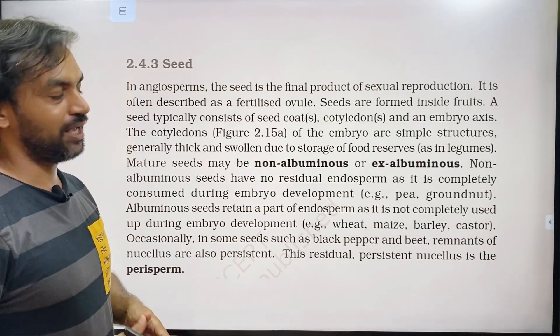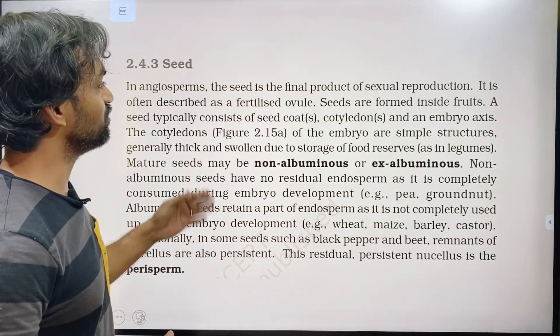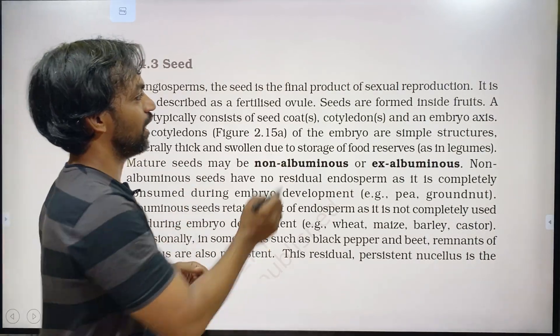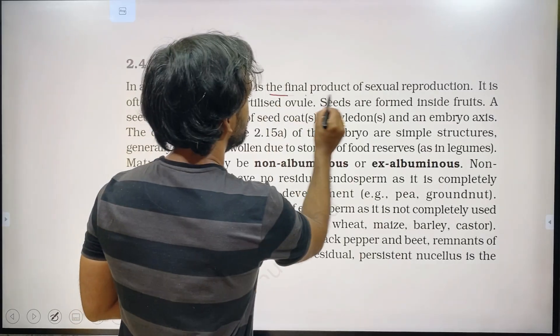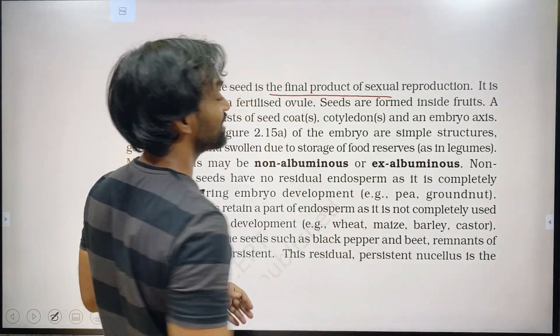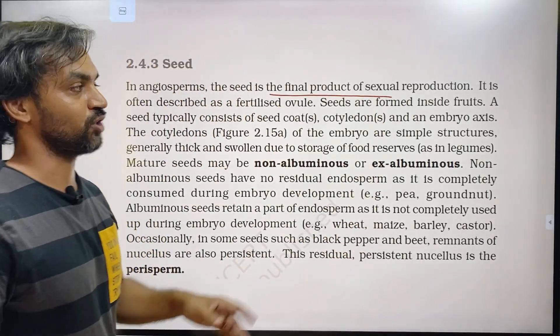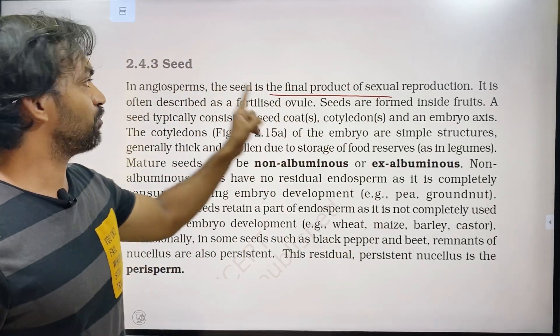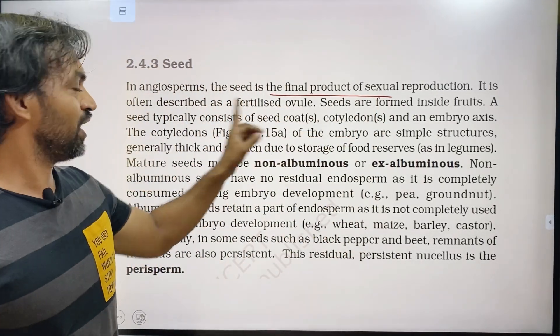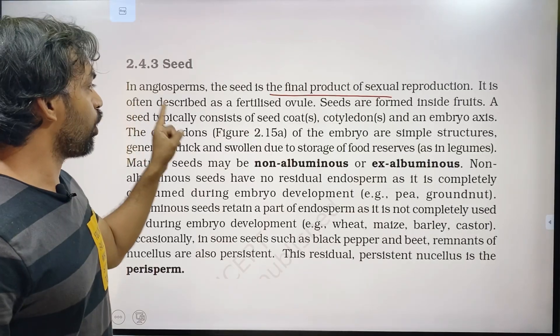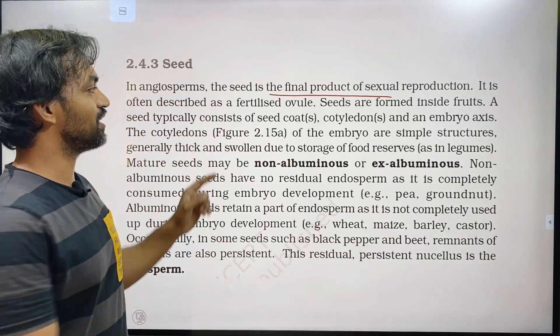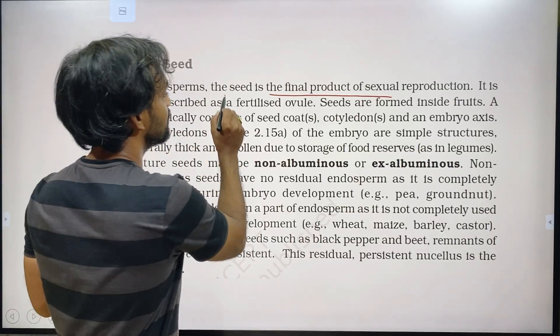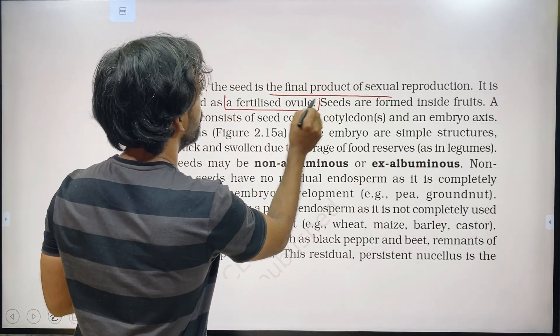In Angiosperm, the seed is the final product of sexual reproduction. It is the final product of sexual reproduction. It is often described as a fertilized ovule.